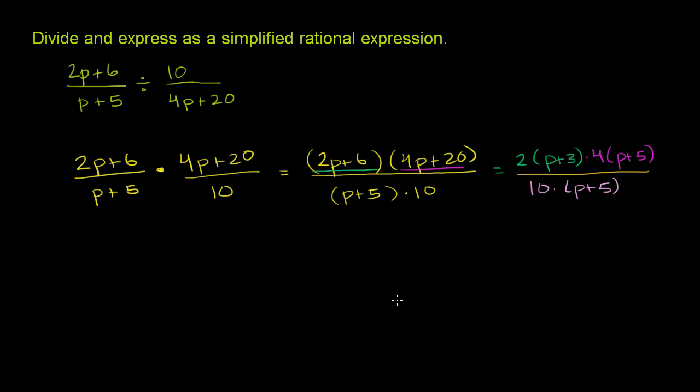So we can already start to cancel out a little bit. Both the numerator and the denominator have something that's a multiple of 2. We can divide the numerator by 2, and this will become 1. Divide the denominator by 2, and this becomes 5.